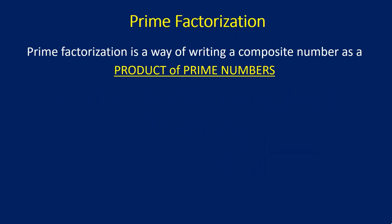So let us first understand what is prime factorization. Prime factorization is basically a process or a method of writing any composite number as a product of prime numbers. For that, you should first know what prime numbers are, which I have discussed in my previous video. However, here I just list down a few of the prime numbers within the range of 1 to 20, which are 2, 3, 5, 7, 11, 13, 17, and 19. We'll be using these prime numbers to see the prime factorization process.